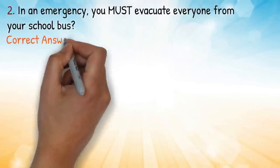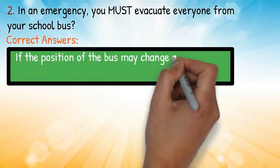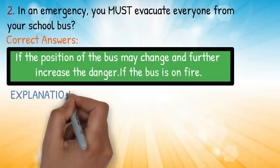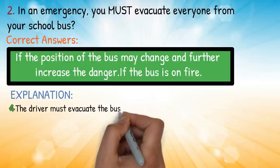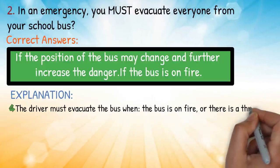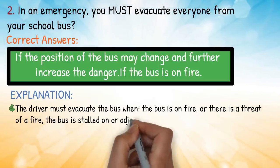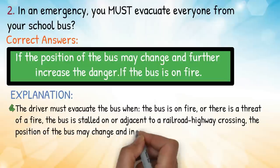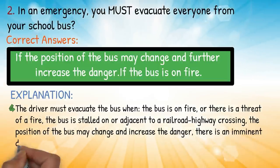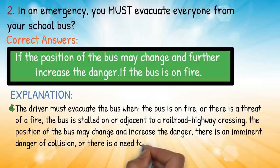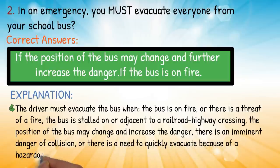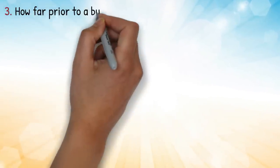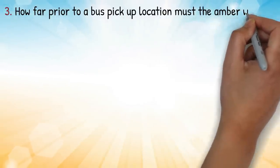Question two: in an emergency, you must evacuate everyone from your school bus — correct answer: if the position of the bus may change and further increase the danger, or if the bus is on fire. Explanation: the driver must evacuate the bus when the bus is on fire or there is a threat of fire, the bus is stalled on or adjacent to a railroad highway crossing, or the position of the bus may change and increase the danger.